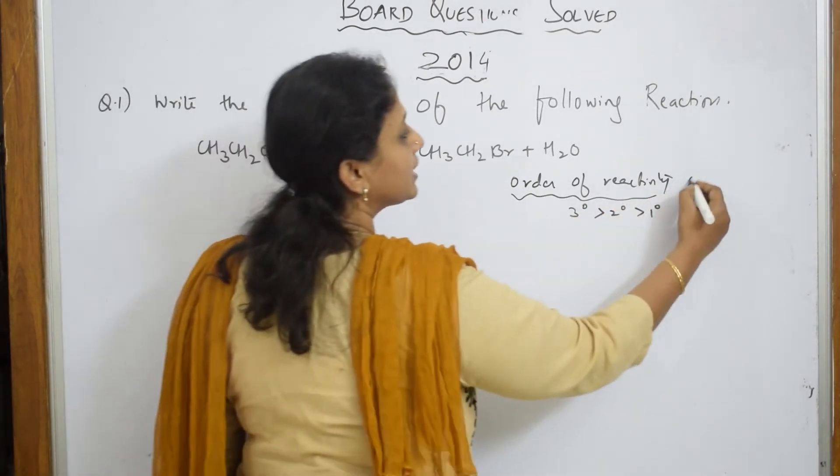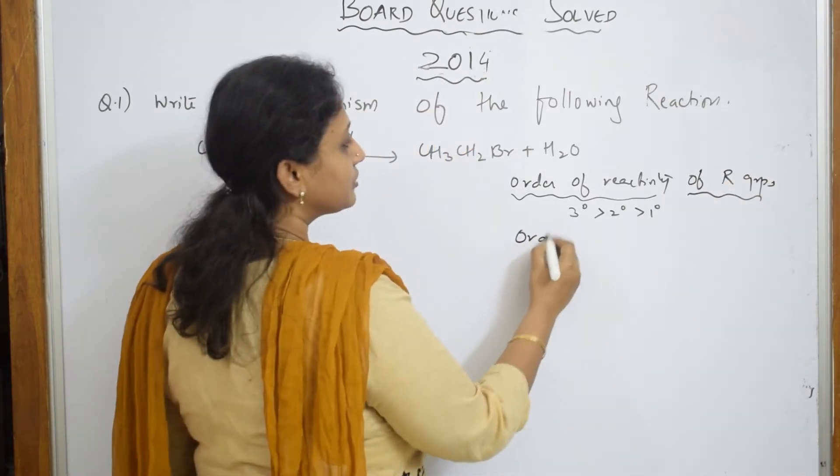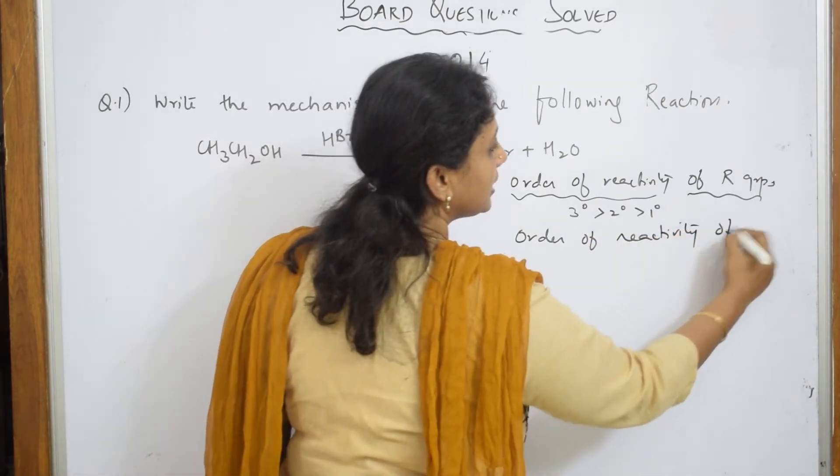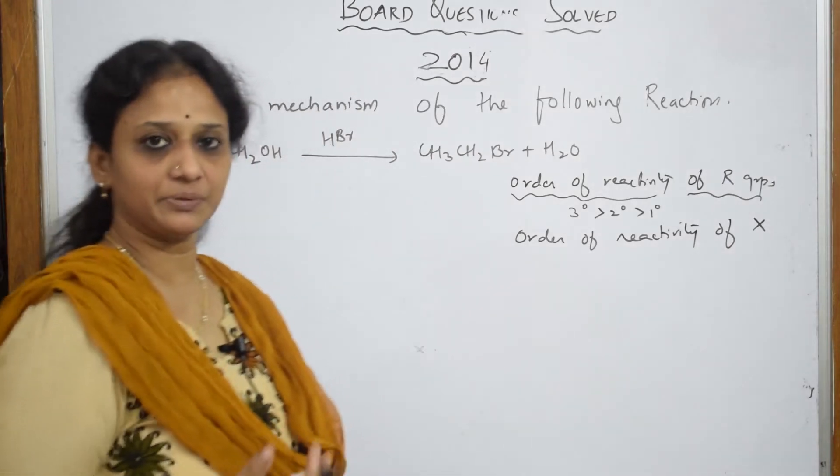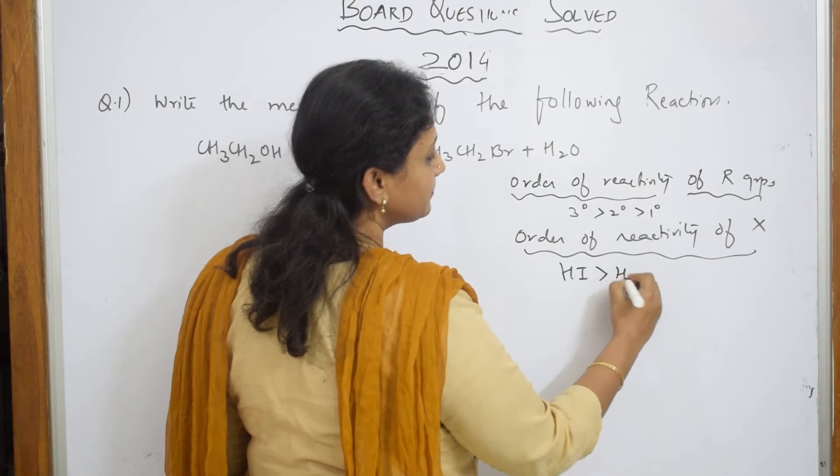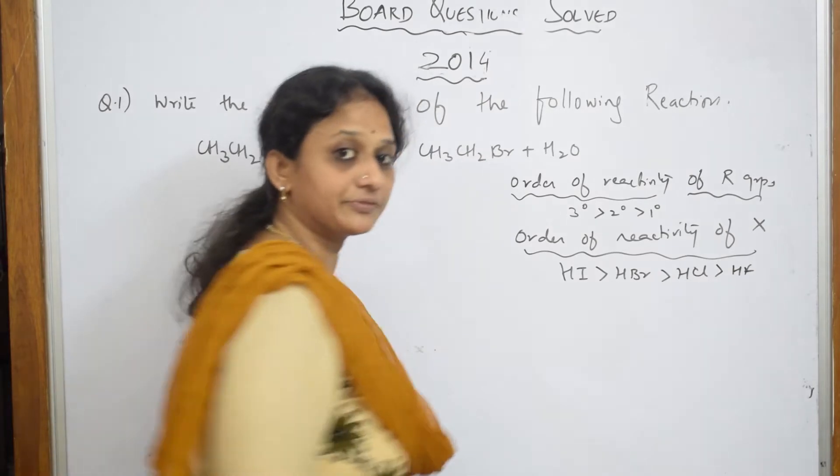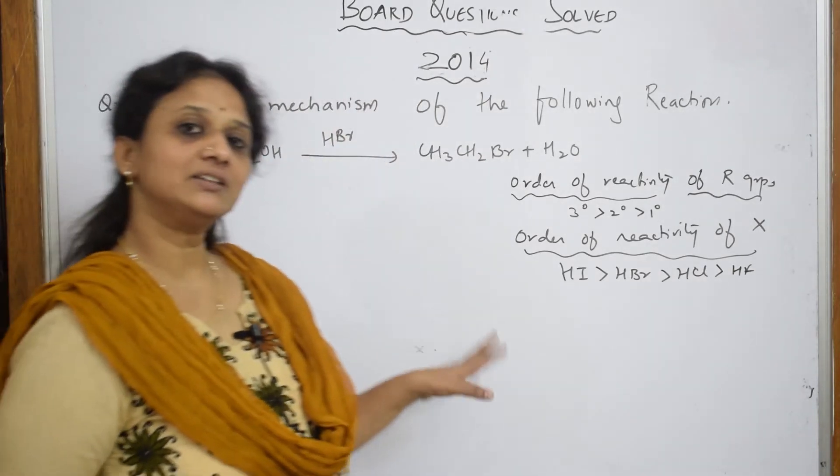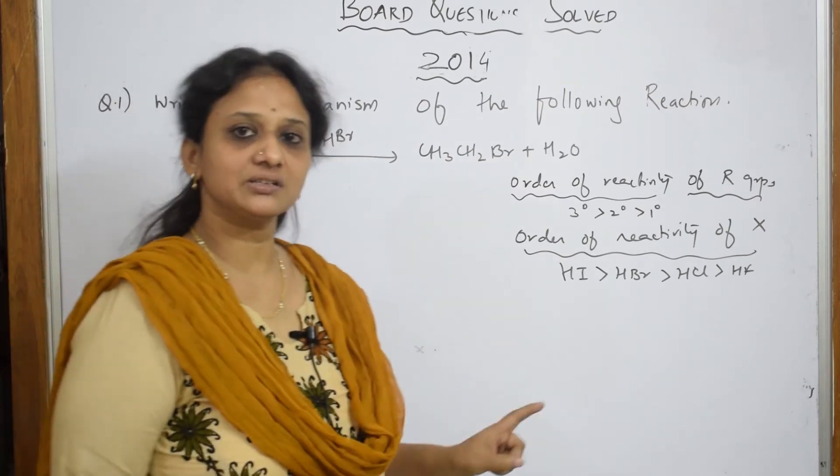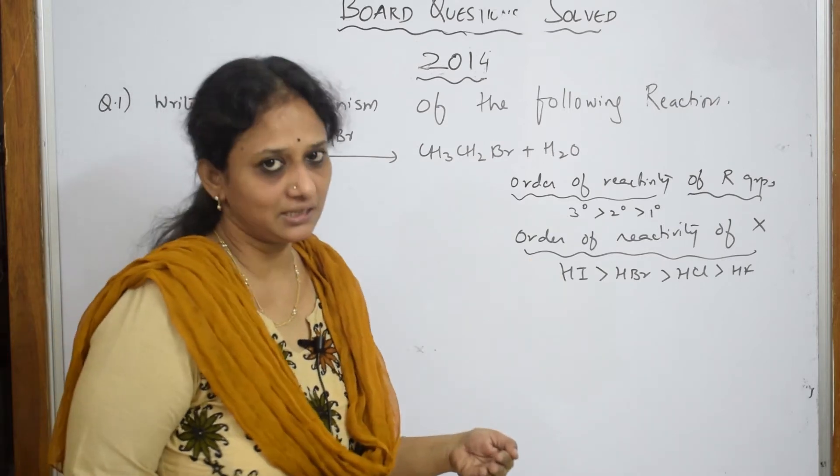Next important order of reactivity of alkyl groups. Second, if I have to write order of reactivity of halogens means which is highly preferred. Basically your HI is more preferred than HBR, more preferred than HCL, and HF is least preferred. Why did I write this order? Because I basically want to come into this concept where HBR is given to me.